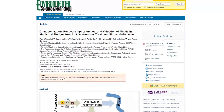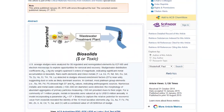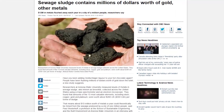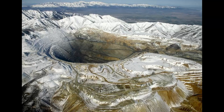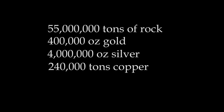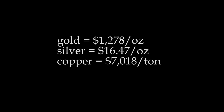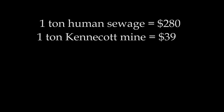The American Chemical Society did studies on this and found that a city of one million people flushes $13 million worth of gold, silver, and other precious metals down the toilet every year. They concluded that one ton of human sewage is worth about $280. That's not a lot, but consider how much the Kennecott Mine in Utah gets — they go through 55 million tons of rock per year, and out of all of that they get 400,000 ounces of gold, 4 million ounces of silver, and 240,000 tons of copper, yielding only about $39 per ton.